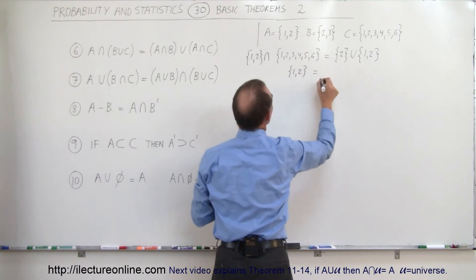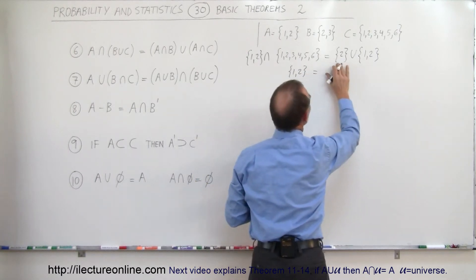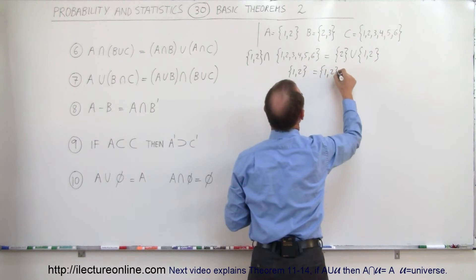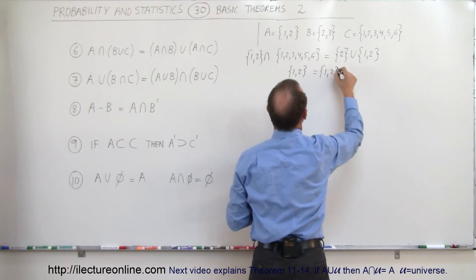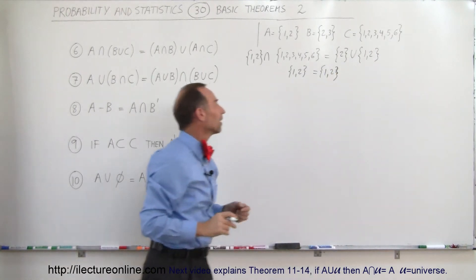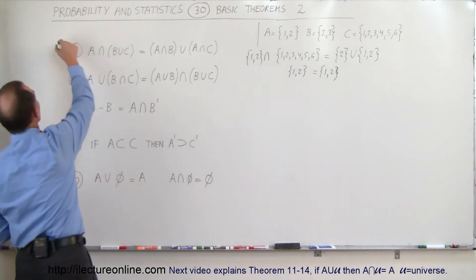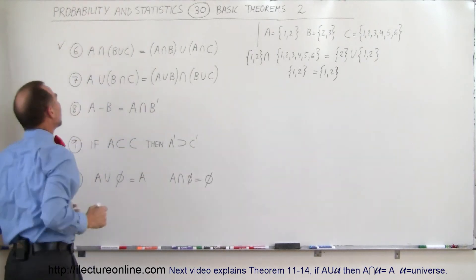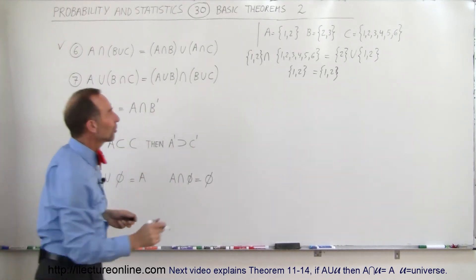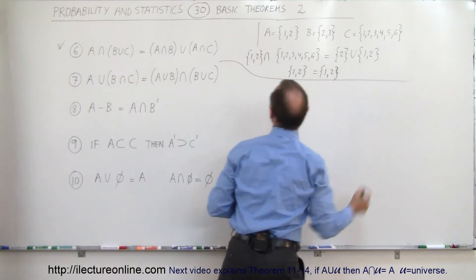That should equal the union of two, and one and two, which is also one and two. You can see they're equal, so we can say that theorem six does indeed work. Let's try the next one.